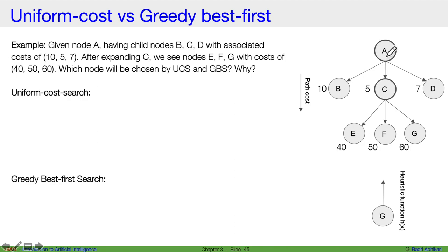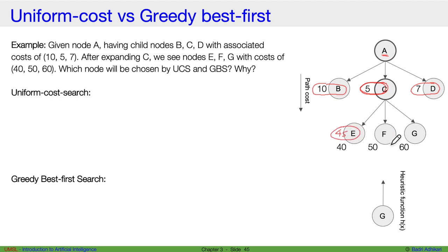In Uniform Cost Search, starting from node A, the priority queue gets B(10), C(5), and D(7). Since C has the lowest cost, it is expanded first. We then put E(45), F(55), and G(65) into the priority queue. Now the queue has B(10), D(7), E(45), F(55), and G(65), so D(7) is expanded next.